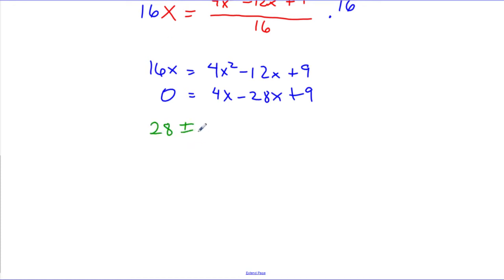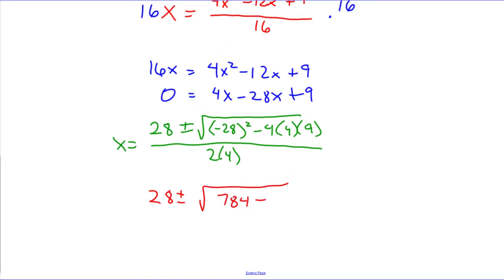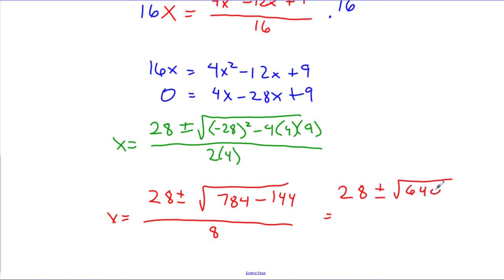Using the quadratic formula: x equals 28 plus or minus the square root of negative 28 squared — that's my b value — minus 4 times 4 times 9, all over 2a, where a is 4, so it's over 8. Simplifying inside the radical: 28 squared is 784. Then 4 times 4 times 9 is the same as 16 times 9, which is 144. So inside the radical I have 784 minus 144, which is 640, all over 8.